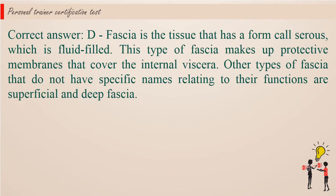Correct answer d. Fascia is the tissue that has a form called serous, which is fluid-filled. This type of fascia makes up protective membranes that cover the internal viscera. Other types of fascia that do not have specific names relating to their functions are superficial and deep fascia.